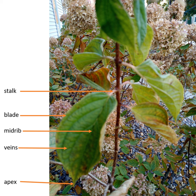Examples of dicots are: apples, beans, broccoli, carrots, cauliflower, cosmos, daisies, peaches, peppers, potatoes, roses, sweet pea, and tomatoes. Dicots are mostly garden flowers, legumes, and the cabbage family.